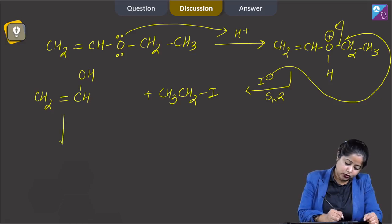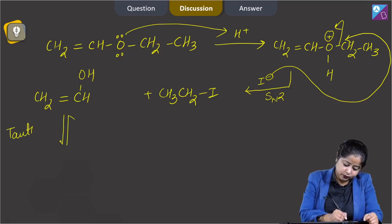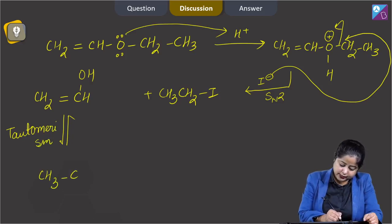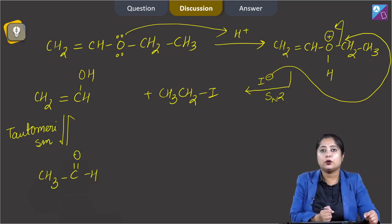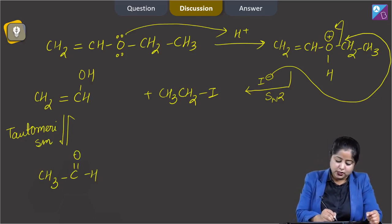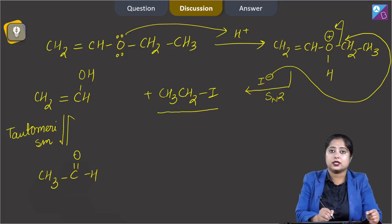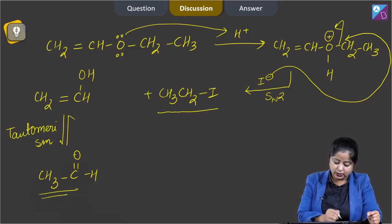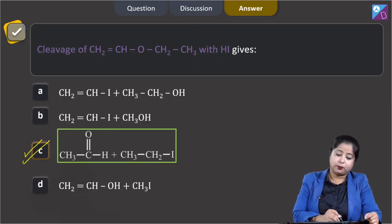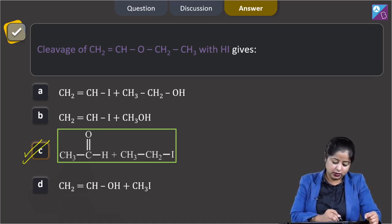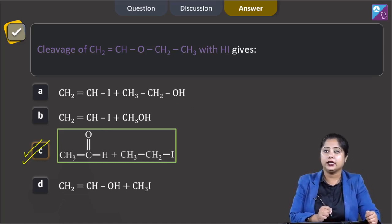Now this molecule will undergo tautomerism and we get acetaldehyde. So the two products obtained during this reaction are CH3CH2I, that is ethyl iodide, and CH3C=OH, that is acetaldehyde. That means the correct answer is option C.